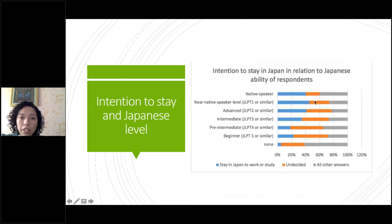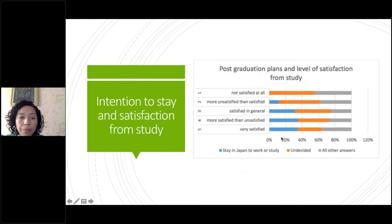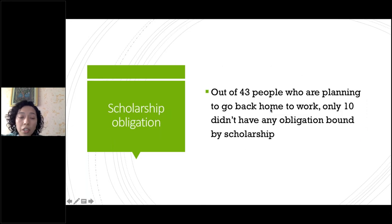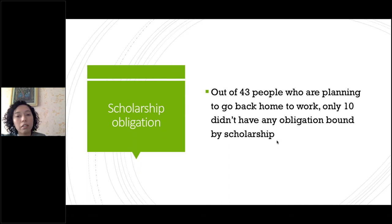Another thing that was interesting for us is Japanese language ability. The blue group represents people who said they plan to stay in Japan to work or study. Generally what we observe is that the higher the level of Japanese, the greater the share of students saying they want to stay in Japan. There is also a relationship between intention to stay and satisfaction from study: the more students are satisfied, the more they intend to stay; for those not satisfied at all, the share of people who wanted to stay is very low. Another thing is scholarship: we had about 43 people who said they plan to go back home for sure, and only 10 of them had no scholarship obligation. Scholarship obligation is a legal obligation, so it's understandable those people cannot stay in Japan.